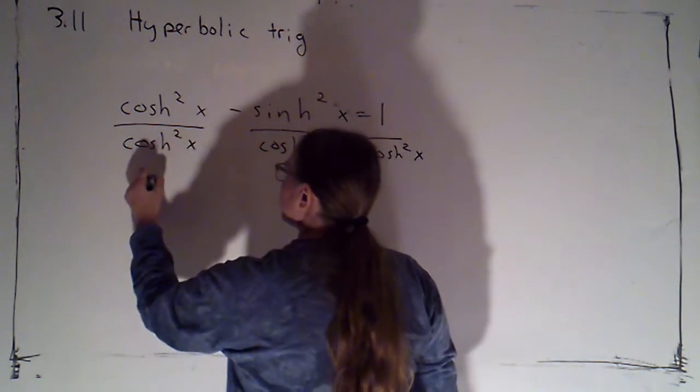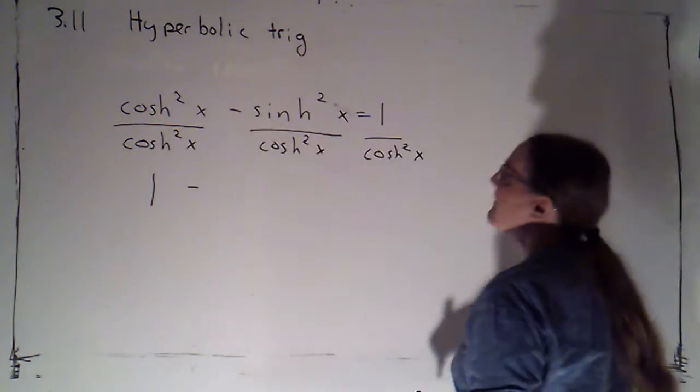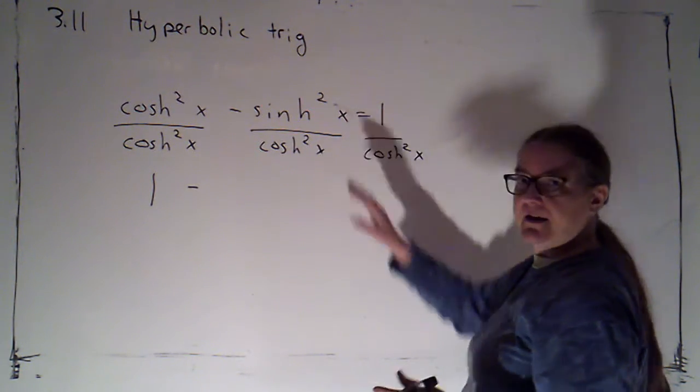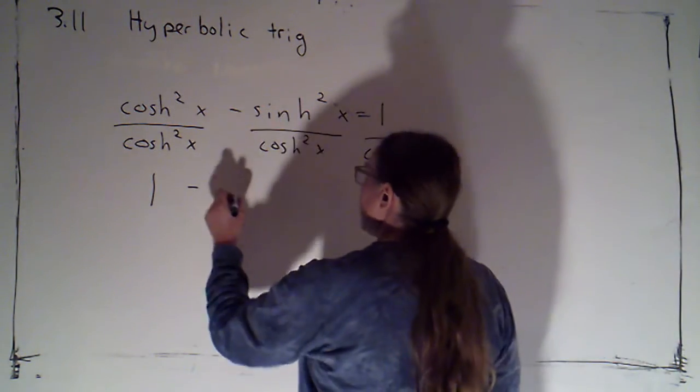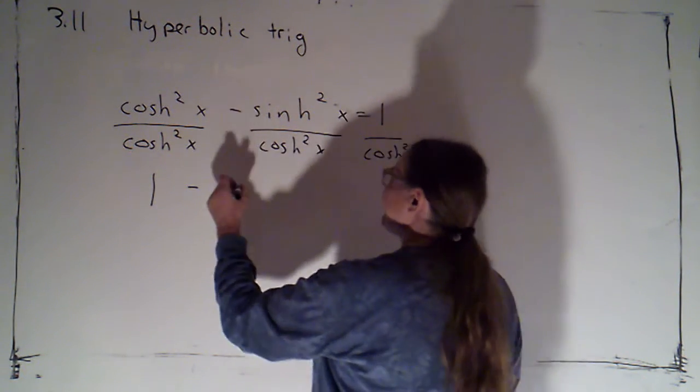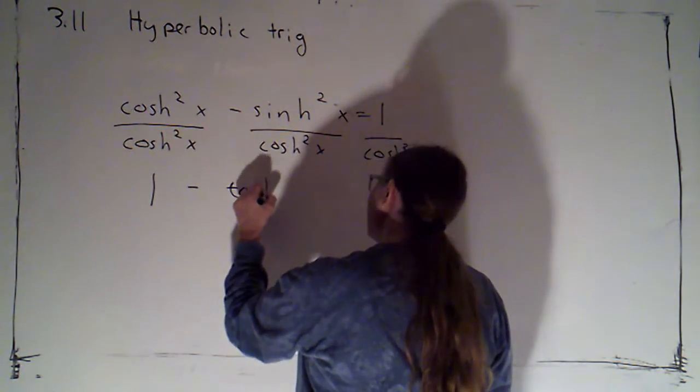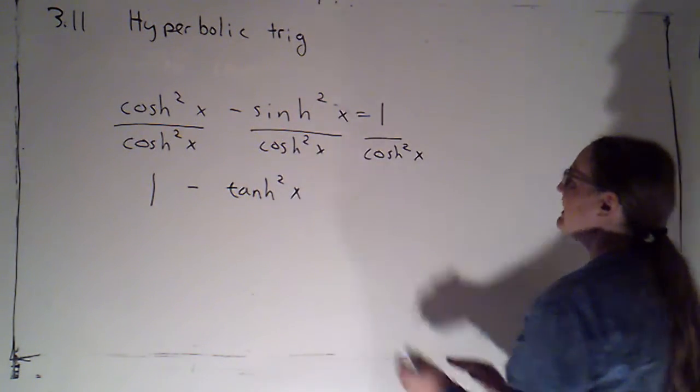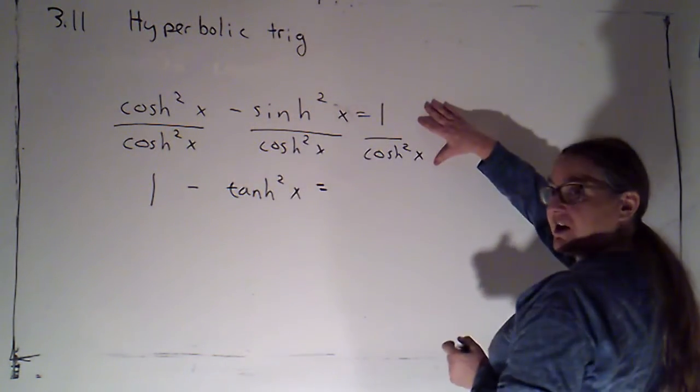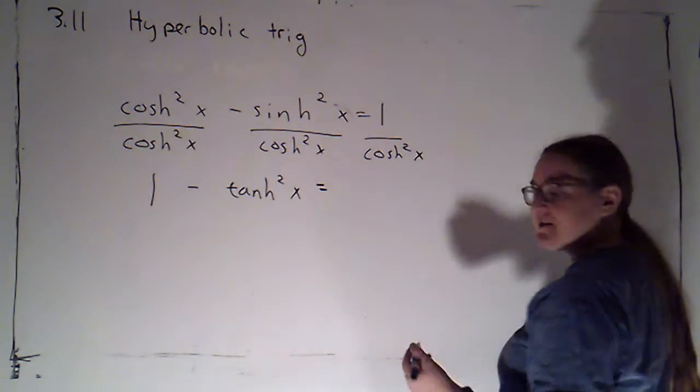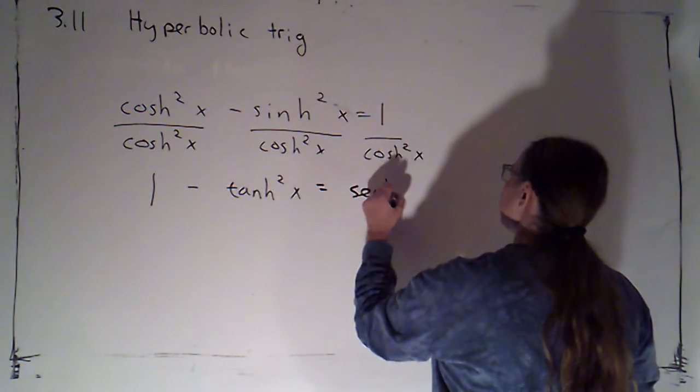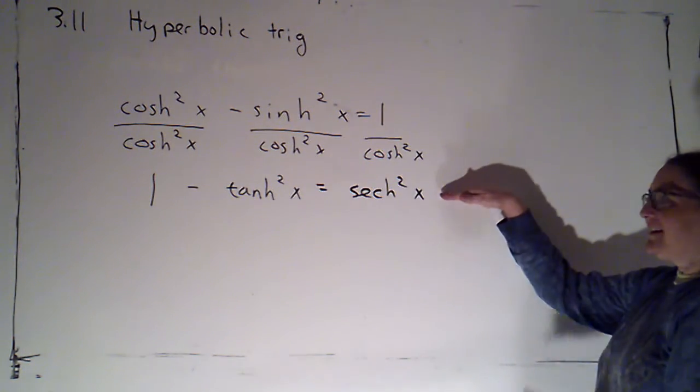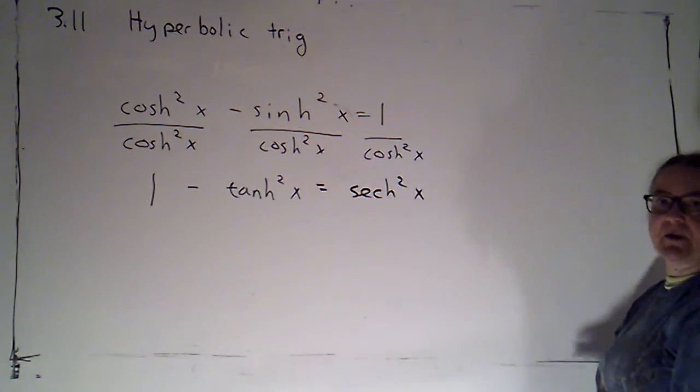Now cosh squared over cosh squared is one minus sinh squared over cosh squared. That's just sinh over cosh of x, sinh of x over cosh of x squared. That's tanh of x squared, or tanh squared x. And one over cosh squared is the same as the fraction one over cosh quantity squared. That's sech squared of x. So this identity gives me a relationship between tanh squared and sech squared.